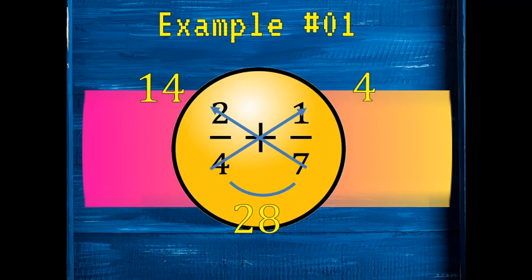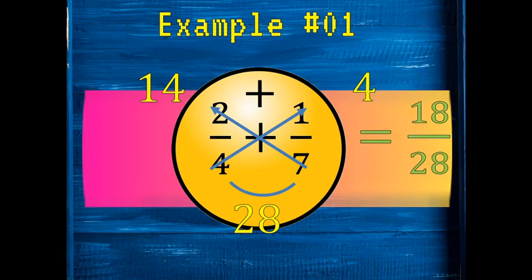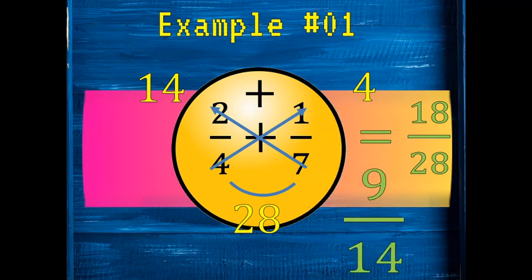Step two: perform the operation. Since it's addition, we add 14 plus 4, giving us 18 over 28. But 18 over 28 can still be simplified by dividing both by 2: 18 ÷ 2 = 9 and 28 ÷ 2 = 14. So our final answer is 9 over 14.